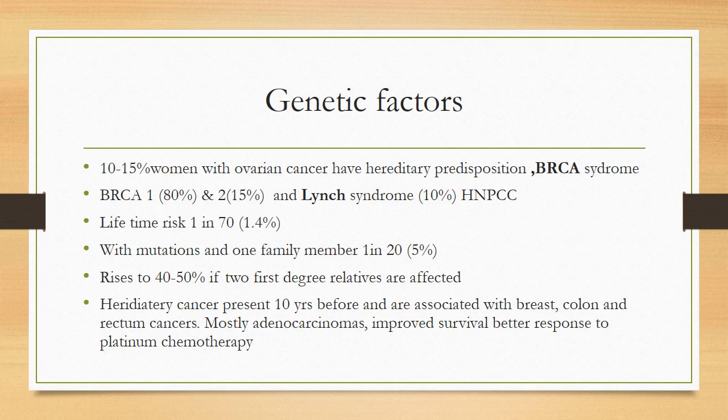Regarding genetic factors: just as we inherit property from our ancestors, we also inherit hypertension, diabetes, and cancers. 10 to 15% of women with ovarian cancer have a hereditary predisposition such as BRCA syndrome — breast ovarian cancer syndrome. BRCA1 mutations carry an 80% chance of developing ovarian cancer, while BRCA2 carries a 15% chance. Lynch syndrome — hereditary non-polyposis colorectal cancer — also has a 10% association with ovarian cancer.